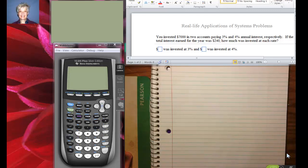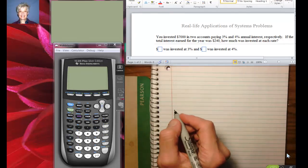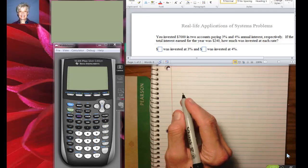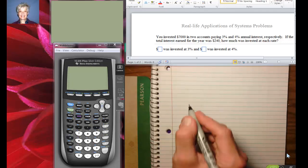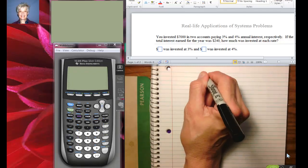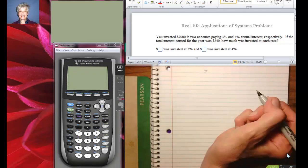Hi, this is your math prof Barbara Rademacher and we're going to do some story problems. Here we go. You invested a whole bunch of money, $7,000, in two accounts. Now what that means is you've got this $7,000 there.